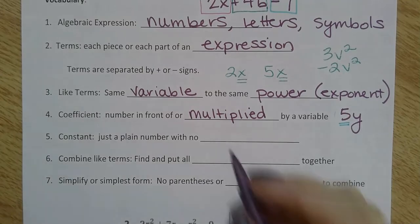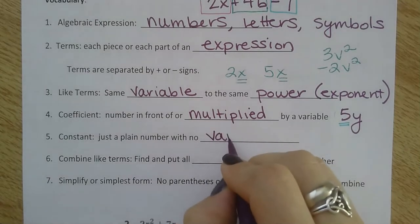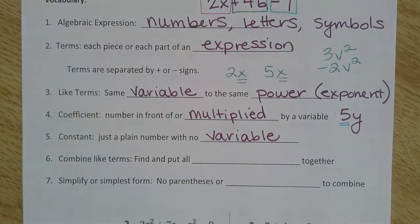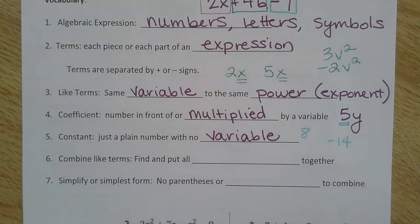Constant is just a plain number with no variable. Plain number, no variable. A constant - 8, negative 14 - those are constants. Plain numbers, no letters.